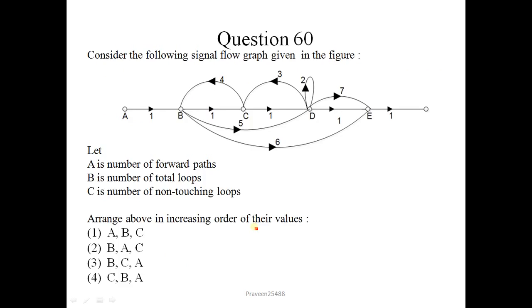Number 60. Consider the following signal flow graph given in the figure. Let A is number of forward paths, B is number of total loops, C is number of non-touching loops. Arrange above in increasing order of their values. Here we will observe all the forward paths and loops. This is 1, 1, 1, 1, 1. Another one forward path is 1, 1, 1, 7, 1. Another one is 1, 5, 7, 1. And next one 1, 5, 1, 1. And the last one is 1, 6, 1. So there are 5 forward paths.